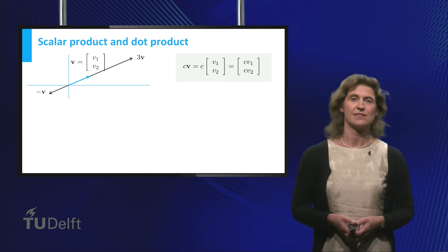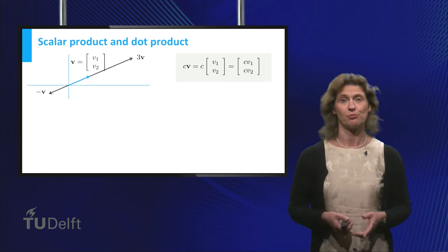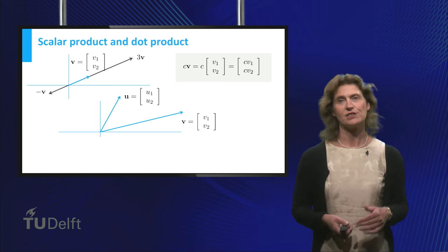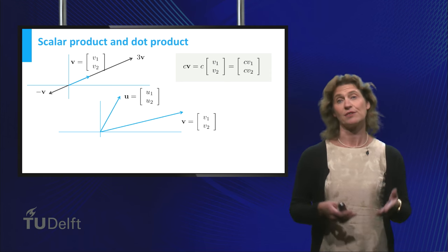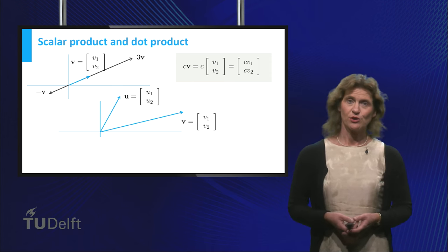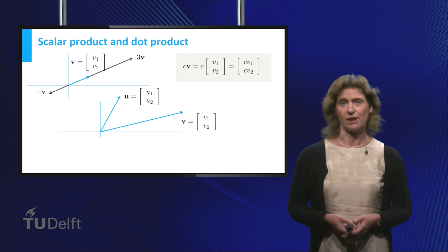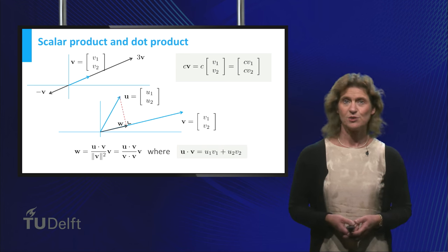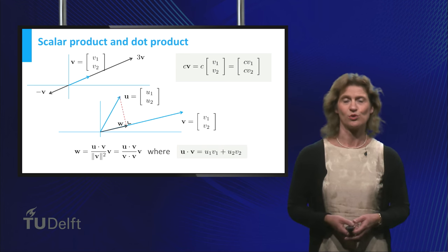In the previous lesson, you learned about the dot product, an operation on two vectors having a scalar as its outcome. Another name for the dot product is the inner product, by the way. This product is closely related to orthogonal projections.